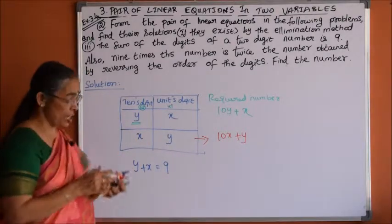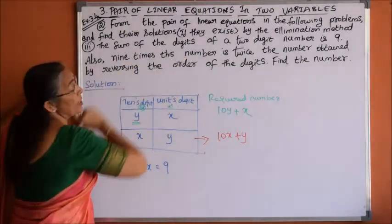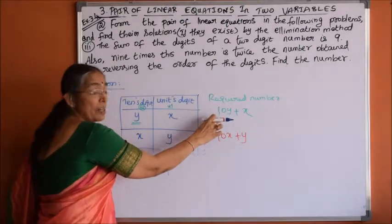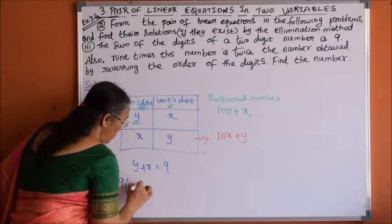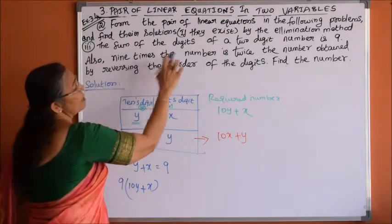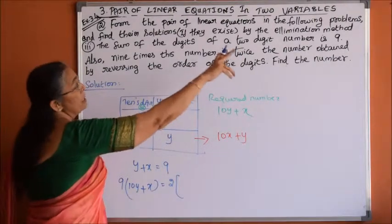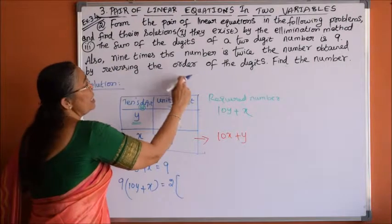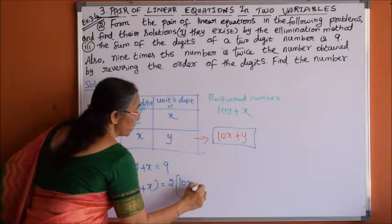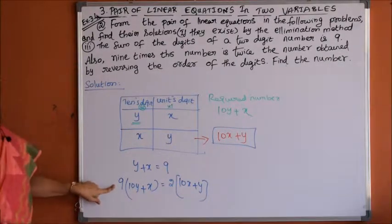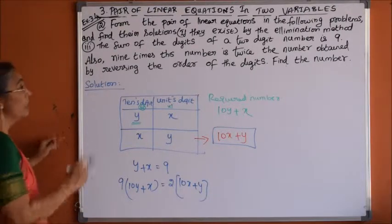Going back to the condition: 9 times the required number (10y plus x) is twice the number obtained by reversing the digits (10x plus y). So 9(10y + x) = 2(10x + y). This gives us our second linear equation. Now we solve these two equations by the method of elimination.